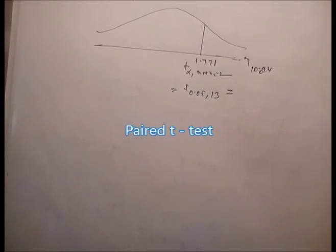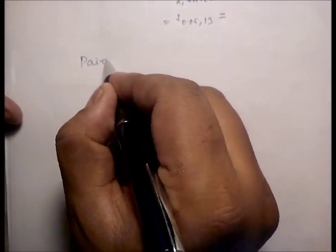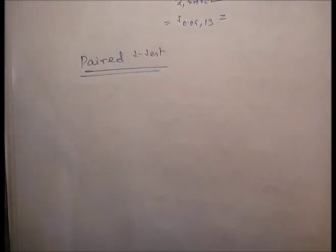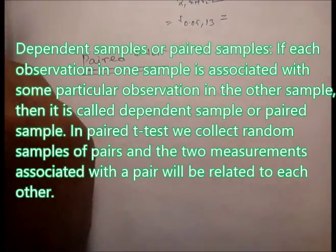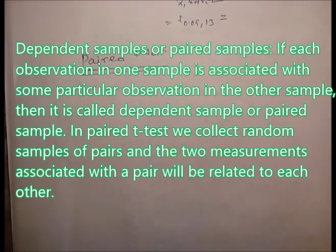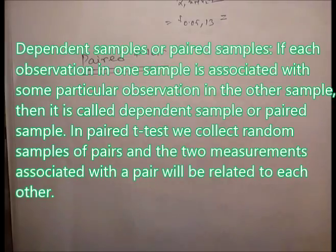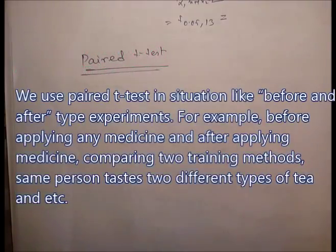Next: the paired t-test for dependent samples. If each observation in one sample is associated with a particular observation in the other sample, it is called a dependent or paired sample. In a paired t-test we collect random samples of pairs, and the two measurements within a pair are related. We use the paired t-test in before-and-after experiments — for example, before and after applying medicine, comparing two training methods on the same person, or testing two different types of tea.